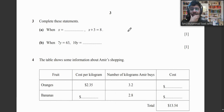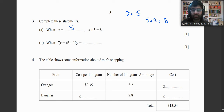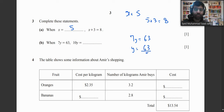The next question says: when x equals dash, x + 3 = 8. Since 5 + 3 = 8, x = 5. The second part says 7y = 63, so y = 63 ÷ 7 = 9. Therefore 10y = 10 × 9 = 90.